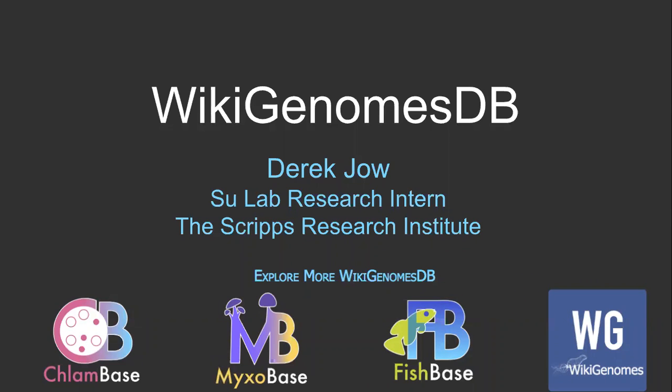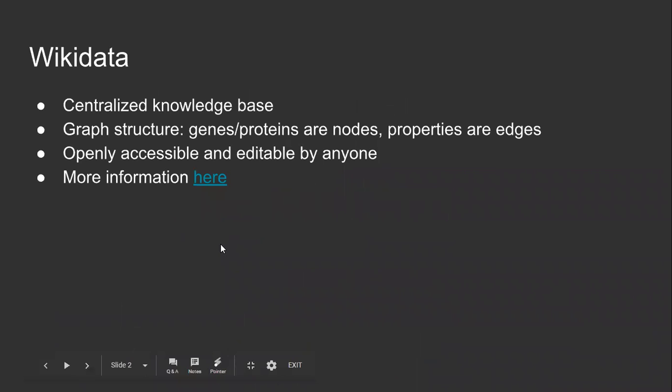I will discuss the details of each in a bit, but first I need to remind you of Wikidata. Back in July, Greta explained the structure and uses of Wikidata. To reiterate, Wikidata is a centralized knowledge graph of structured data. Wikidata is to data as Wikipedia is to text. Following the spirit of the Wikimedia Foundation, Wikidata is open, accessible, and editable by anyone. In the context of Wikigenomes, we use Wikidata as a hub for biological information. Some of it is extracted from literature, while most is mined from external databases like NCBI or Ensemble.